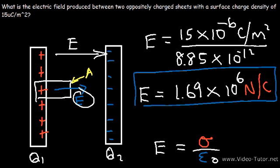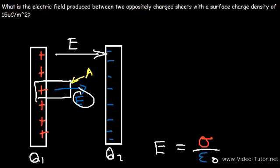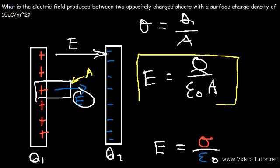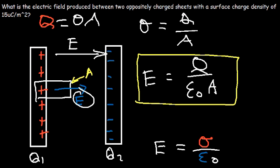The equation is simply sigma divided by epsilon-naught. Now, if you want to express the electric field in terms of the area of the plates, keep in mind sigma equals Q divided by A. So we can describe the electric field as Q divided by epsilon-naught times A. If you don't know the total charge, remember Q equals sigma times A — multiply the surface charge density by the area of the plates to get the total charge on that plate.